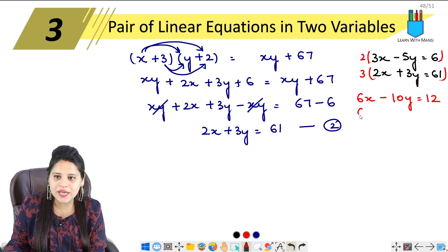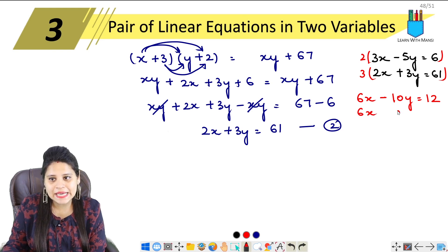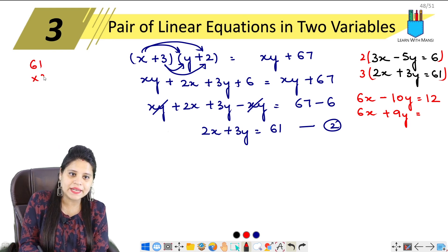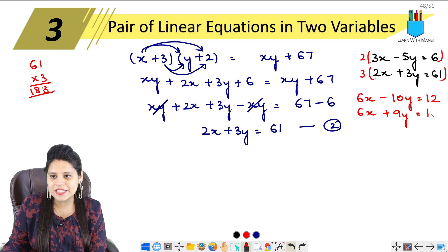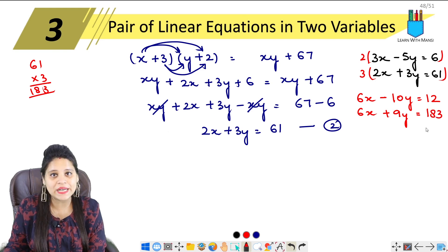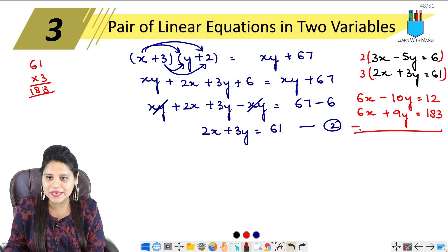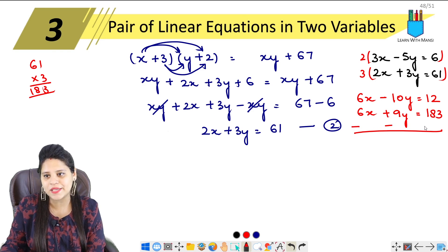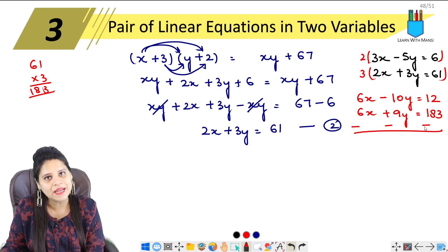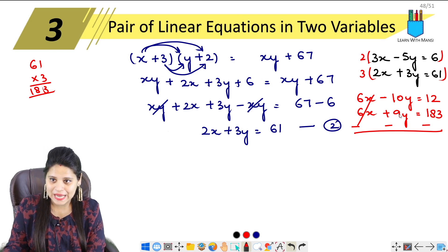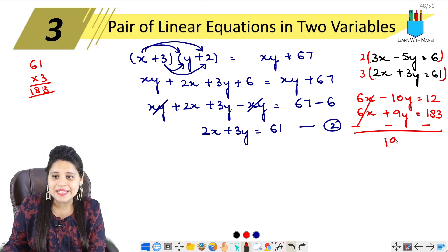Now we subtract the first from the second (changing signs): 6x − 6x cancels. Then −10y with sign changed becomes +10y, and +9y gives 10y + 9y = 19y. On the right side: 183 − 12 = 171. So 19y = 171.